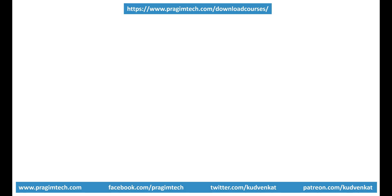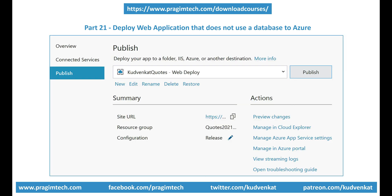In part 21 of this video series, we discussed how to deploy an ASP.NET web application that does not use a database to Azure. This is a one-step process. Using the Visual Studio Publish feature, we create an app service and app service plan in Azure, then hit the publish button to have our code deployed. With just a few clicks, in just a few minutes, we have our app up and running in Azure.